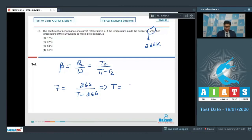we find out the value of T and it turns out to be equal to 304 Kelvin, which will be equal to 31 degree Celsius, and hence option number 4 is the correct answer.